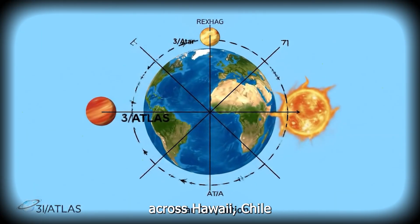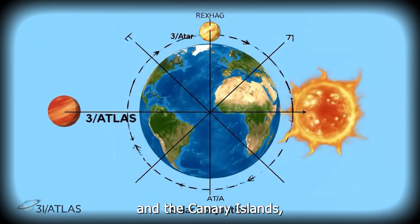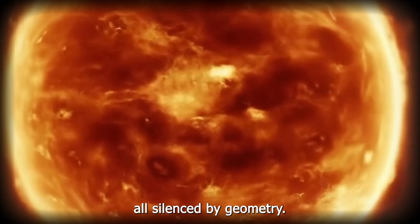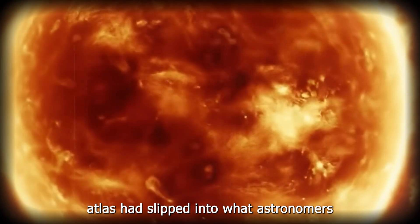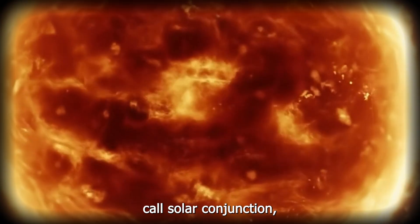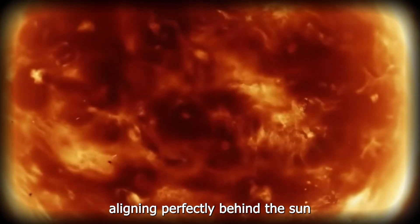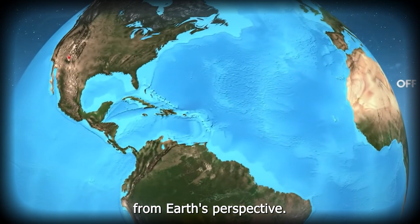The Sun became a wall of fire between humanity and the unknown. Optical observatories across Hawaii, Chile, and the Canary Islands, all silenced by geometry. 3i Atlas had slipped into solar conjunction, aligning perfectly behind the Sun from Earth's perspective.